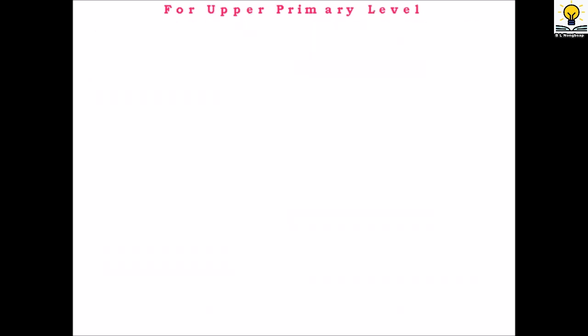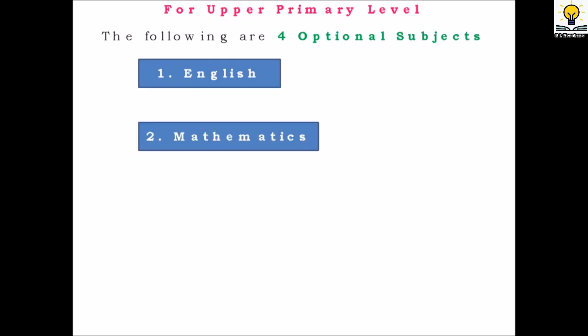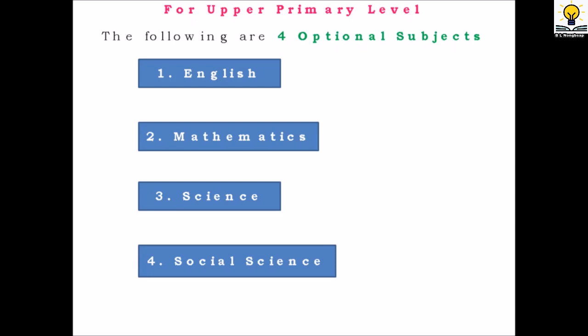For upper primary level, there are four optional subjects offered in the DLA curriculum: English, Mathematics, Science, and Social Science. Out of these four, they have to prepare a maximum of three unit plans or mind maps in any of their optional subjects — altogether a total of nine unit plans or mind maps.